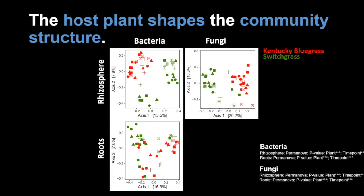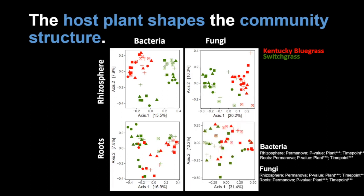For fungi, it's the same in the rhizosphere — for bacteria we have two distinct groups based on the plants. For fungi in the roots, even though the permanova was significant and we can see red and green separated, they are still more spread out. This may be due to the fact that the microbes being recruited to the roots might be more similar, because you have fewer microbes coming in and getting recruited by the plants.